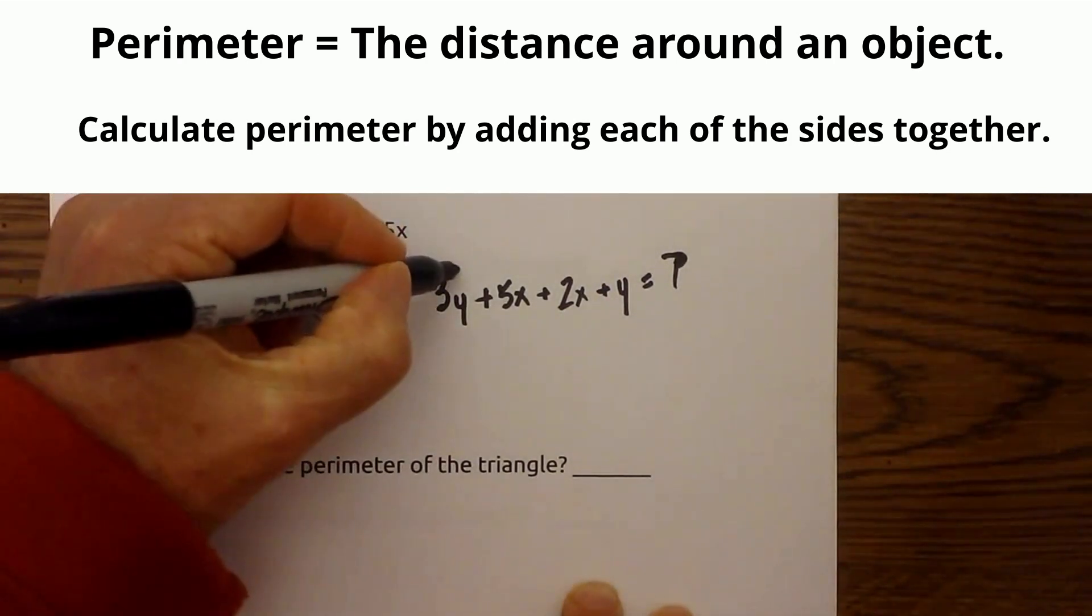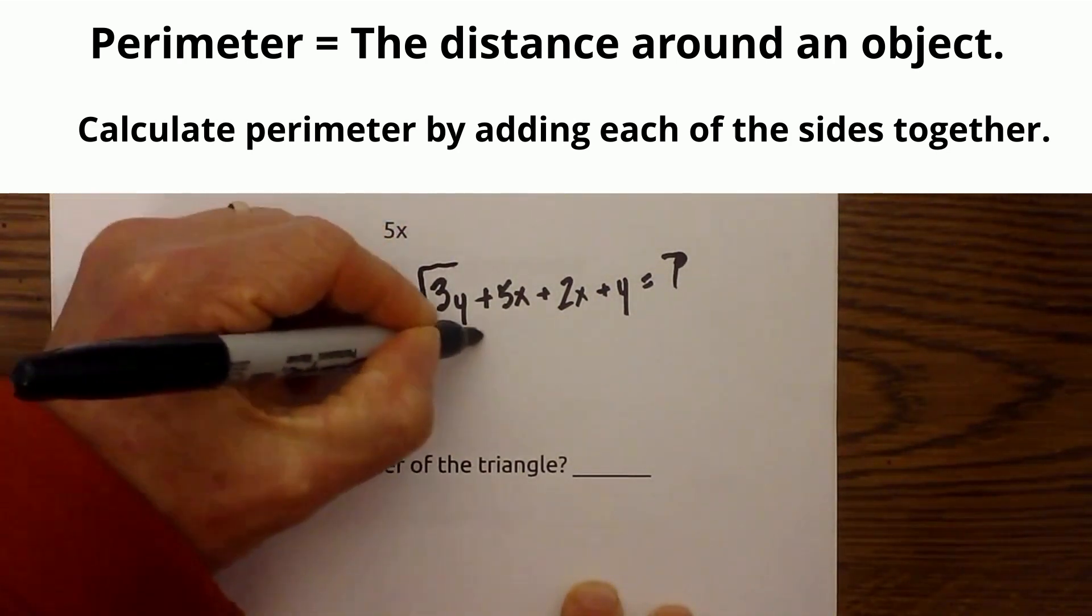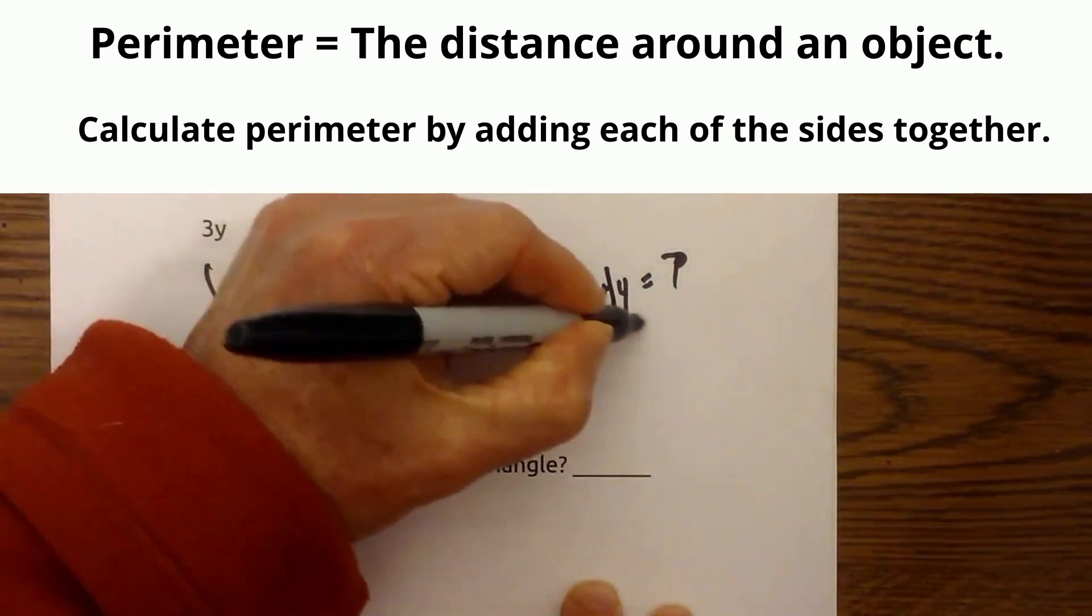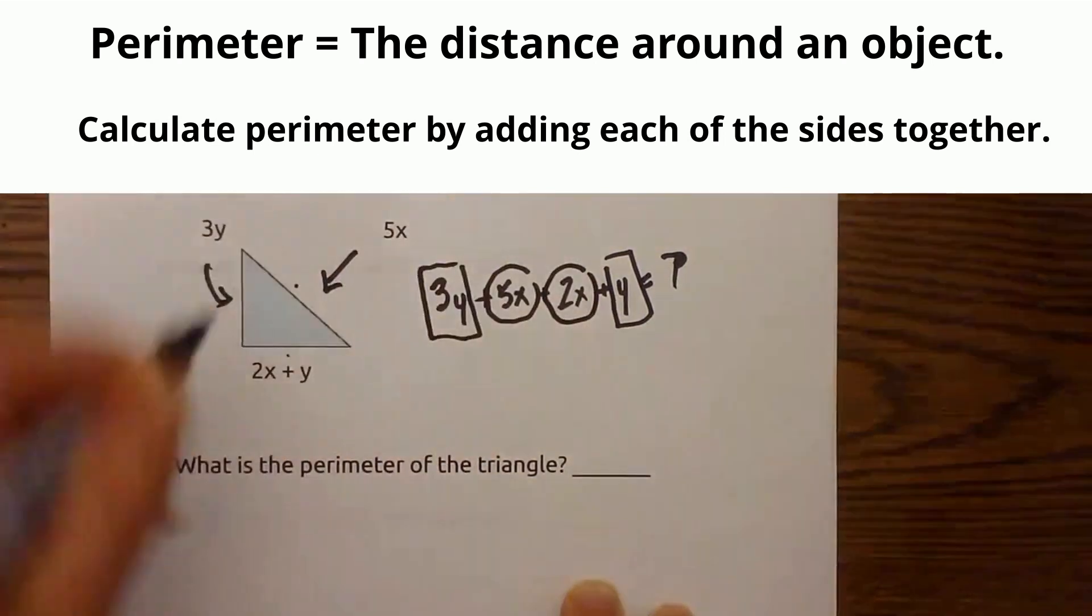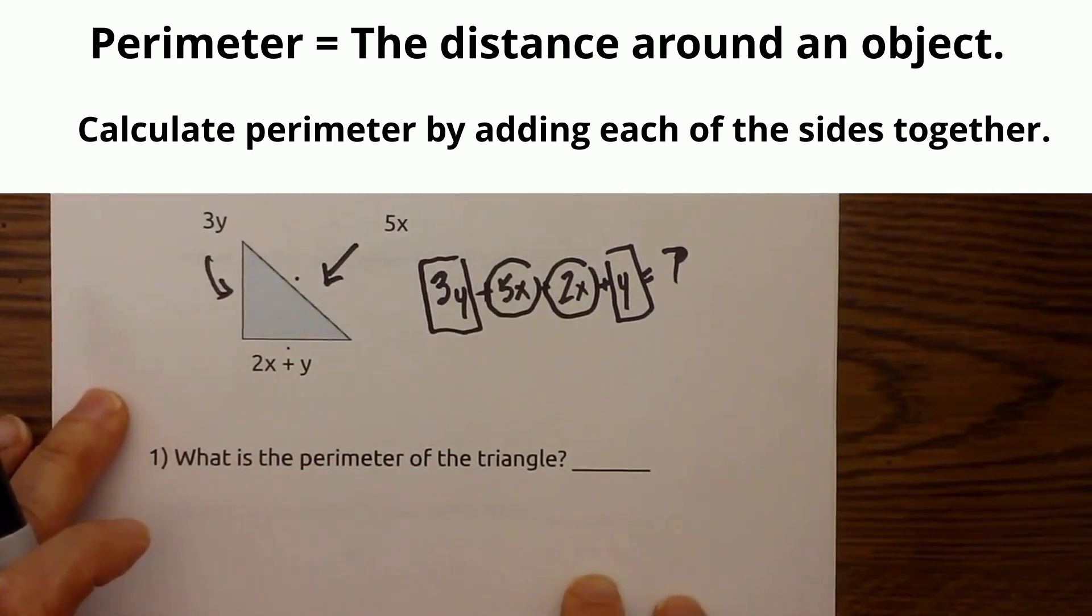So to help you see like terms, I'll go ahead and put a box around the y's and I'll put a circle around the x's so you can see the like terms. So now I just add the boxes and the circles together.